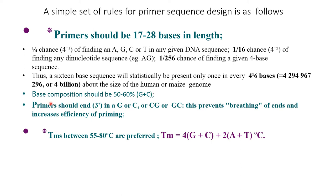Base composition should be 50 to 60 percent GC content. Primer should end 3 prime in a G or C. This prevents breathing of the end and increases the efficiency of the primer.